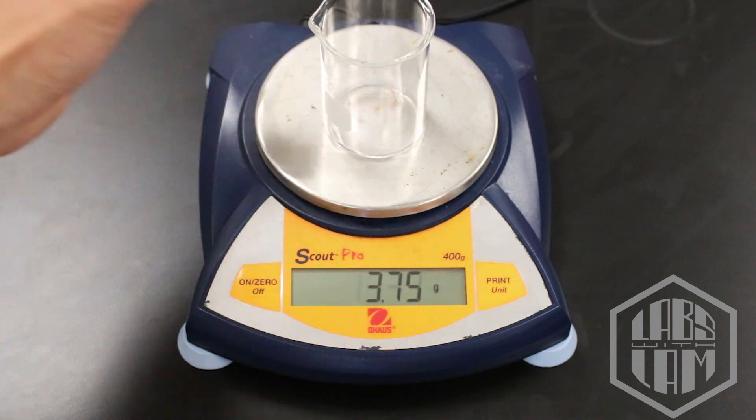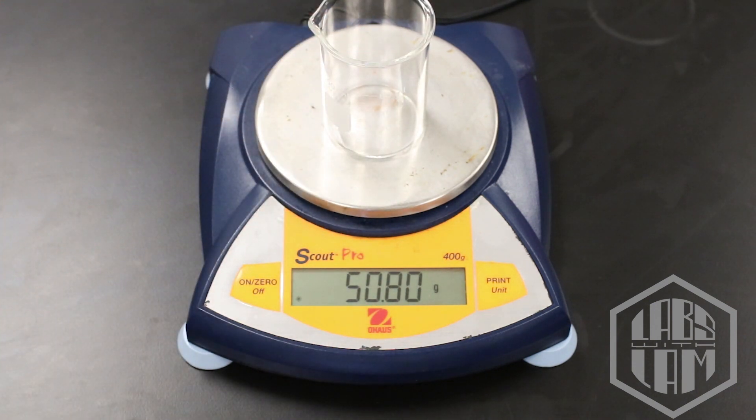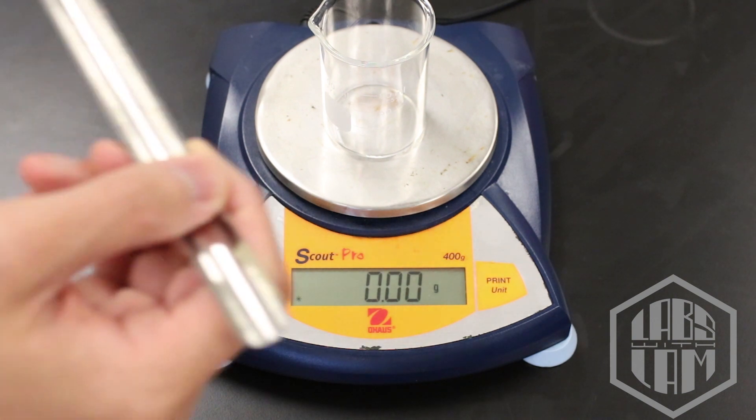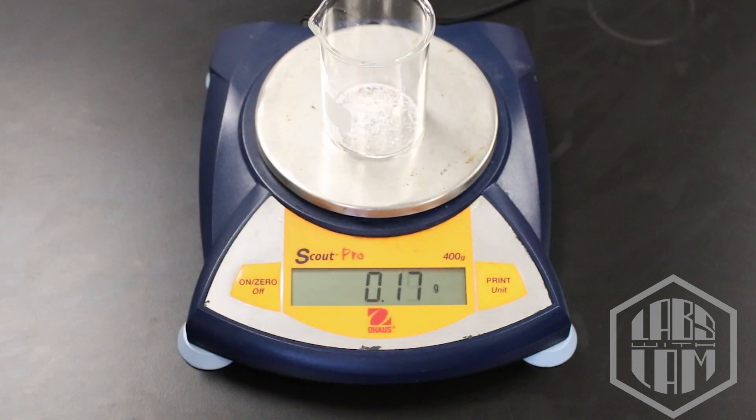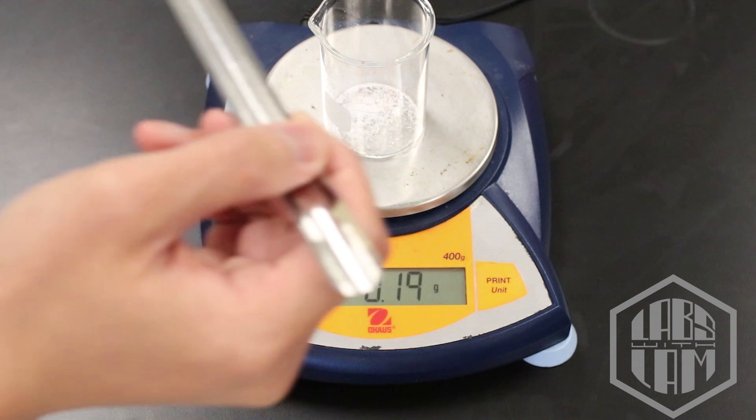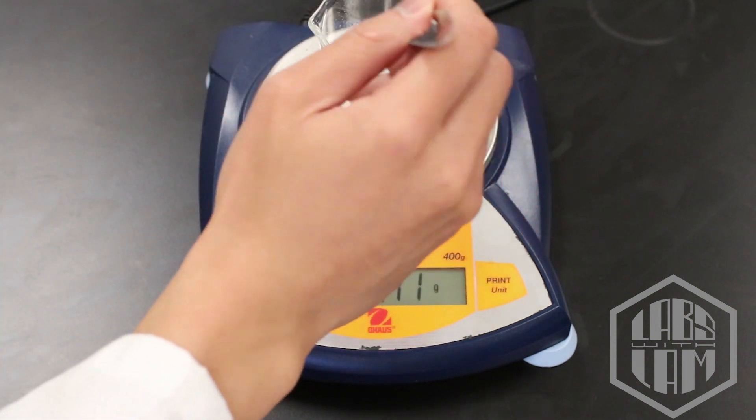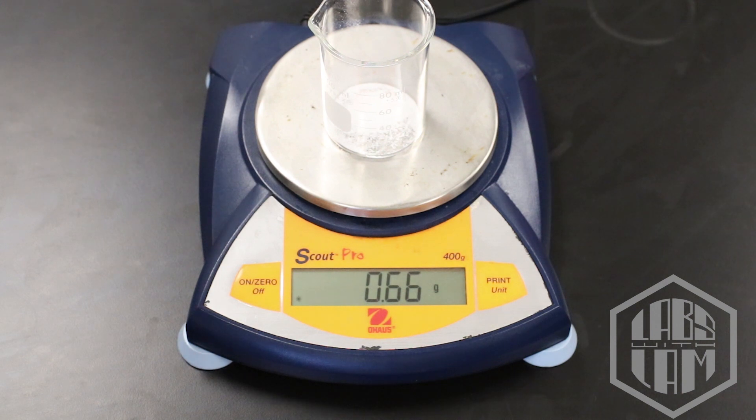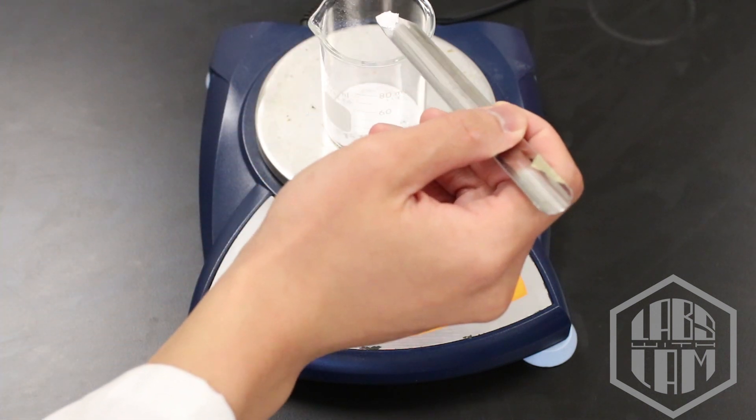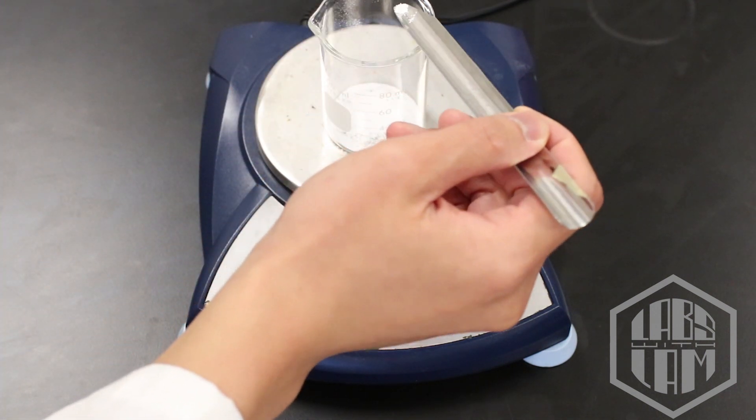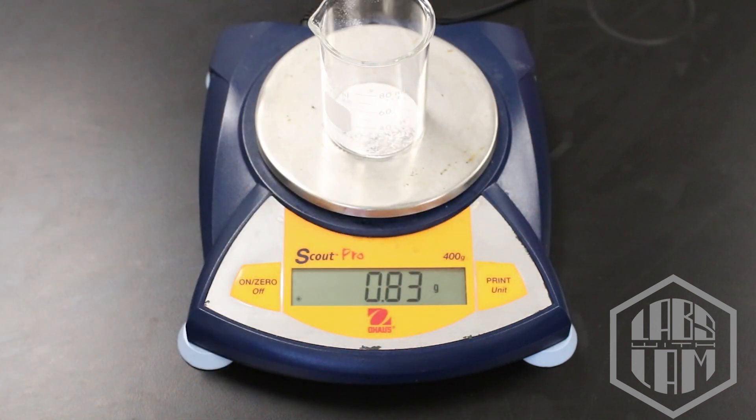Next up is our beaker. I don't actually need the mass of this, so we're going to zero it out. This will let us determine the mass of the sodium carbonate we're going to put inside it. We're aiming for about 0.80 grams, but we want to record what we actually use. Overshot it a little bit, but that's okay. Make sure you record what you actually used, not what you were aiming for.